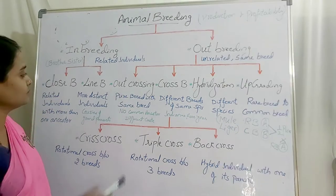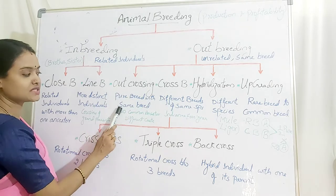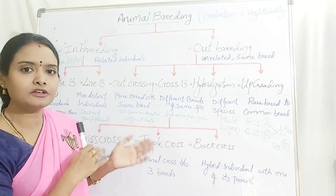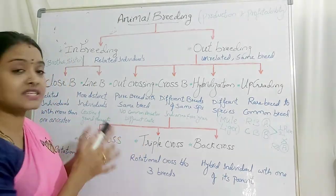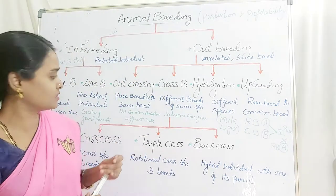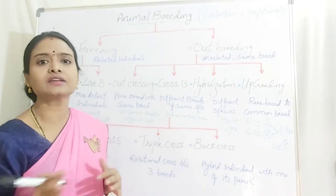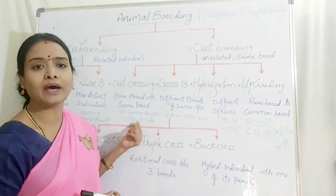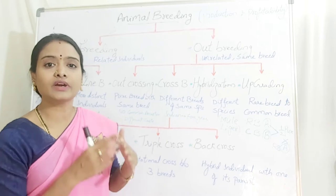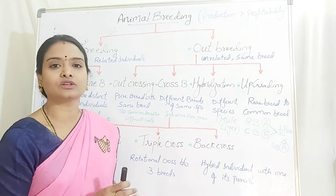In outcrossing, it is a pure breed mated with the same breed — pure breeds belonging to different families. The breeds are the same but they belong to very distantly related families where they don't share a common ancestor. For example, like inter-caste or inter-religion marriages among humans, where they belong to the same species but their ancestors are not common at all.